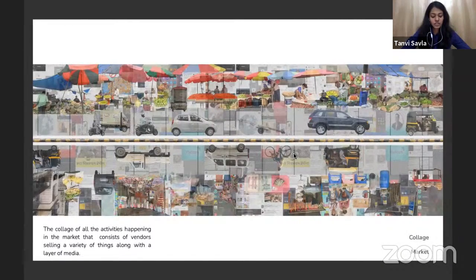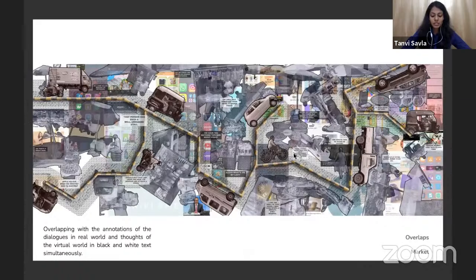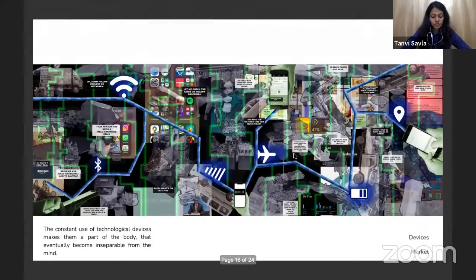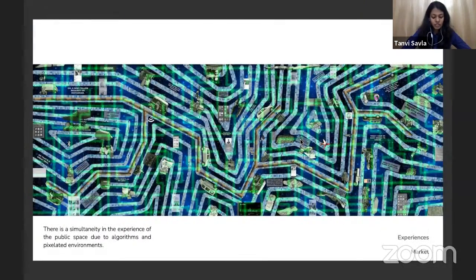Market narrative: 'I will buy tomatoes from here — it looks fresh. Let me check the rates on Amazon Groceries first. So much crowd out here. Oh, a new follower request on Instagram. I should help that lady cross the road — the vehicles are going quite fast. Oh, that's a great deal. These evening hours make this road unbreathable — every errand comes out at the same time. Alexa, what's on my list? Apple ka kya bhav aya, bhaiya — or santra? Today I have so many emails to check. I like the smell of this henna — I will come within a week to apply. Have you watched this new music video?'